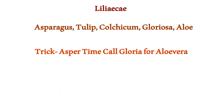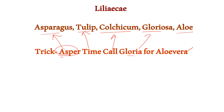Next is the Liliaceae family. Examples are asparagus, tulip, colchicum, gloriosa, and aloe. The trick is: 'As per thyme, colgloria for aloe vera.' From 'asper' it's asparagus, from 'thyme' it's tulip, from 'col' it's colchicum, from 'gloria' it's gloriosa, and from 'aloe' it's aloe vera. A very simple trick to remember all Liliaceae examples.